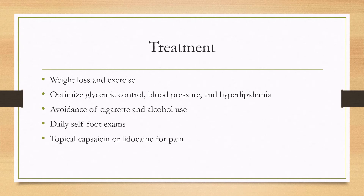In terms of treatment, the mainstay is weight loss and exercise. You can also focus on optimizing glycemic control, blood pressure, and hyperlipidemia. Avoidance of cigarette use and alcohol use is important — specifically alcohol use, as chronic alcohol use can also cause a polyneuropathy. Daily self foot exams are important; the patient can examine his own feet on a daily basis for ulcers, and the feet should also be checked at clinic visits.